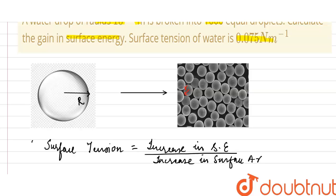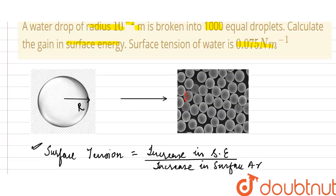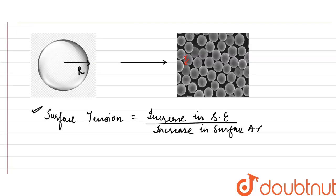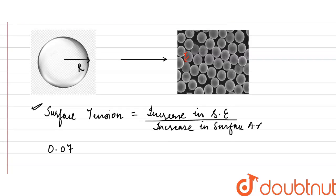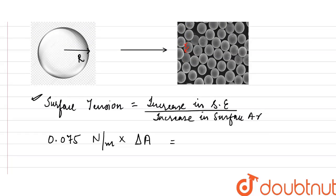Surface tension of water is given as 0.075 newton per meter. We have to calculate the increase in surface energy, which is the increase in surface area from a liquid bubble to a thousand droplets.